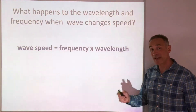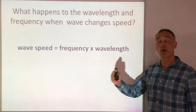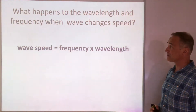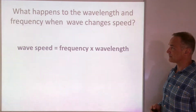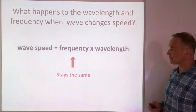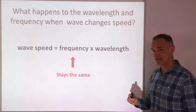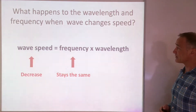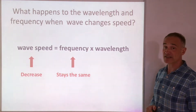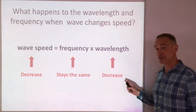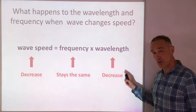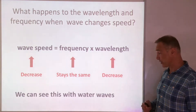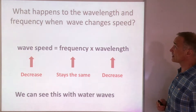So what happens to the wavelength and frequency when waves travel from one medium into another and change speed? We use the wave equation to work this out. The key thing is that frequency stays the same — you don't gain or lose waves per second. Which means that if the speed decreases, the wavelength must also decrease. Or if the speed goes up, the wavelength goes up. We can see this with water waves in the next video.